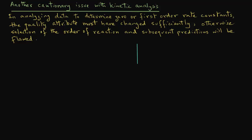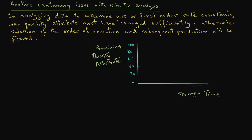Let's look at this with a diagram. We will plot remaining quality attribute versus storage time. Recall that zero order kinetics gives you a straight line when the quality attribute is changing during time. So, we have a straight line here.